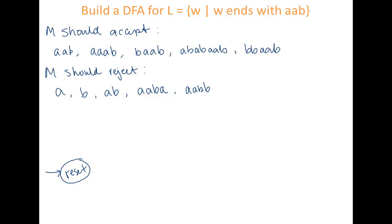For reasons that will become apparent later, I'm going to call my initial state, usually Q0, I'm going to call it reset. Then I'm going to have a state here that means I have seen an A. I want to transition from my start state to the state A if I see an A from the start state.